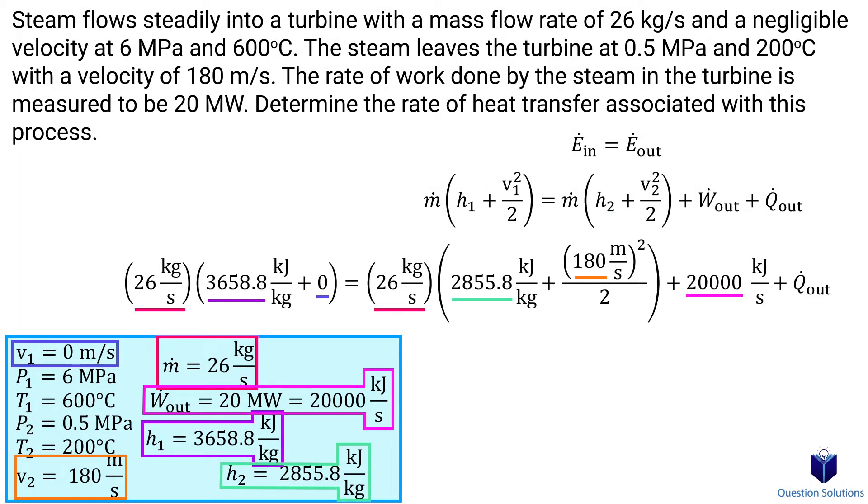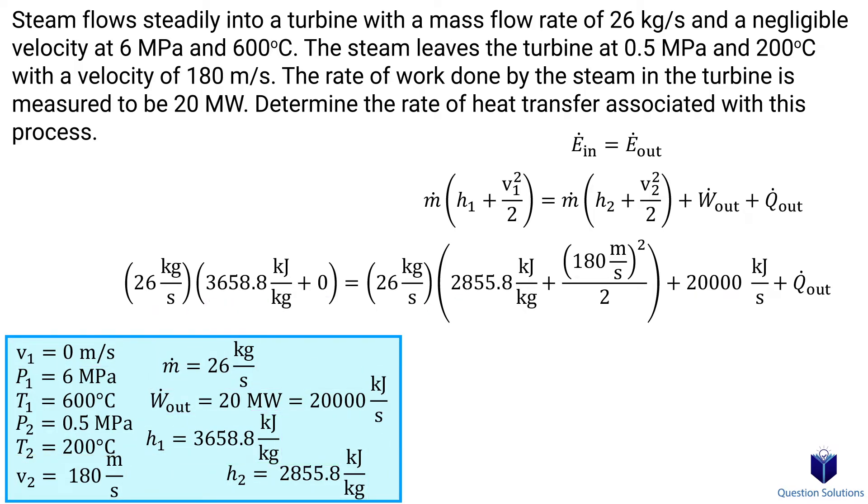Now we can start plugging in values. One thing to note here is that since meters squared over seconds squared is equal to joules per kilogram, you have to either divide this by 1000 or multiply all the kilojoule terms by 1000 to get the answer. Remember, we can't add kilojoules to joules, the units have to be the same. Solving tells us that 456 kW of energy is transferred as heat through this process.